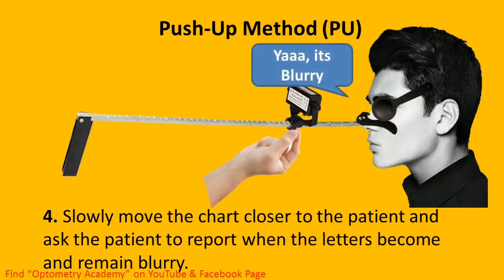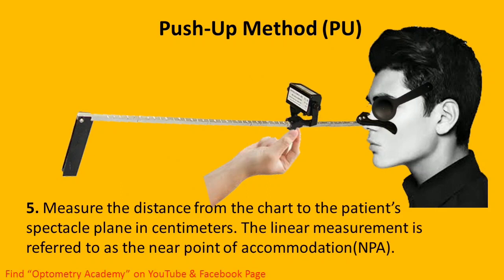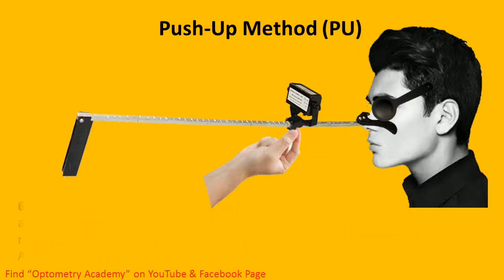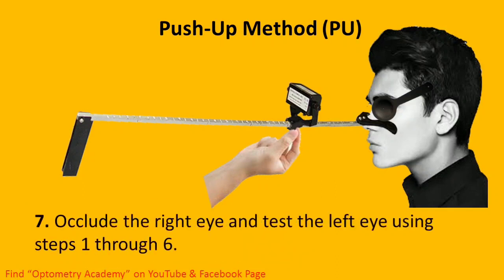When the patient reports blur, measure the distance from the chart to the patient's spectacle plane in centimeters. This linear measurement is referred to as the near point of accommodation (NPA). Convert the linear distance into diopters by dividing 100 by the near point of accommodation. The resulting diopter value represents the patient's amplitude of accommodation. The formula is: 100 ÷ NPA. Then occlude the right eye and test the left eye using steps one through six.